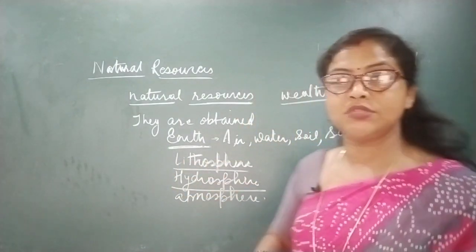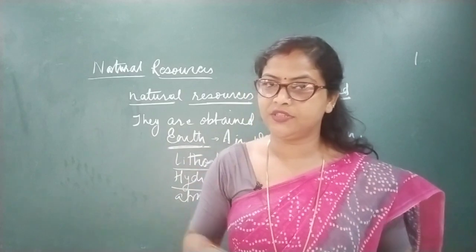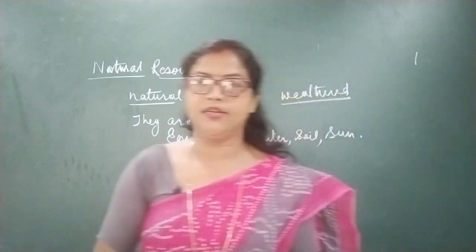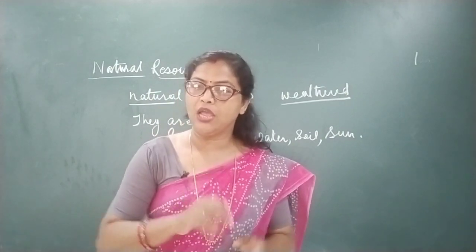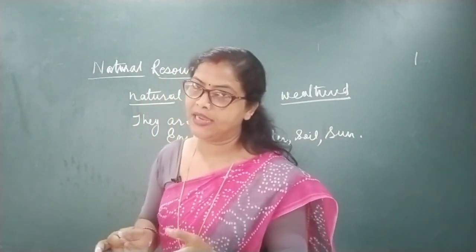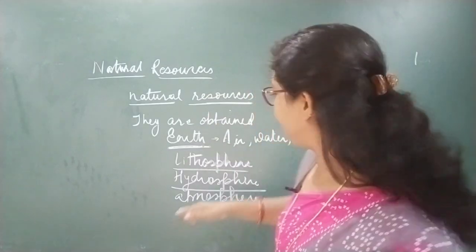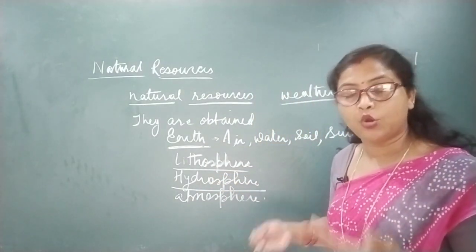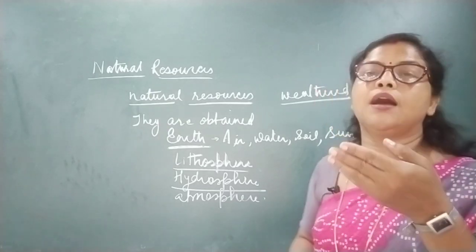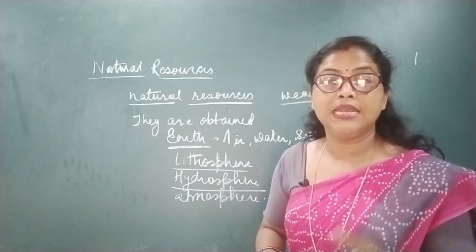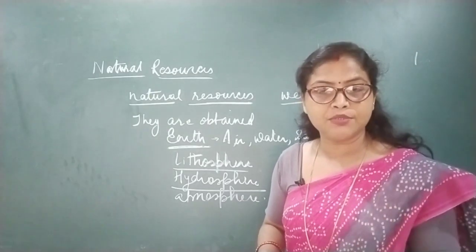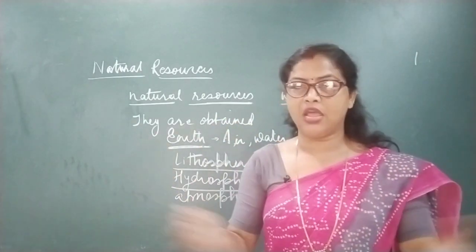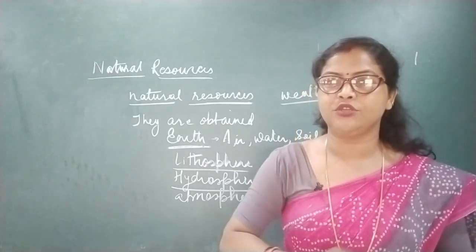Now, hydrosphere: around 71% of the surface of the earth is covered by water. This sphere and this part we call hydrosphere. The resources in hydrosphere are oceans, rivers, lakes, ponds, dams — these all are filled with water, and that particular part or sphere of the earth is known as hydrosphere.